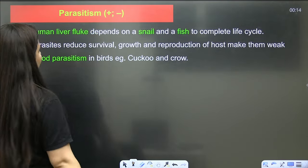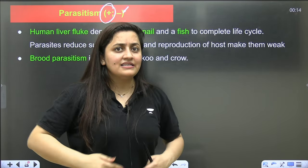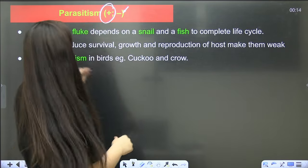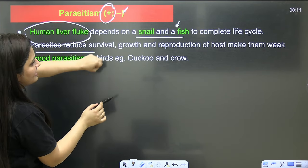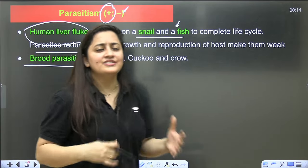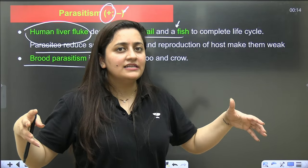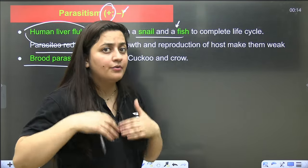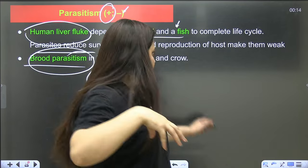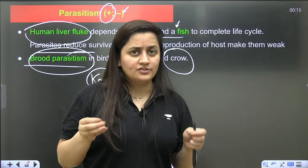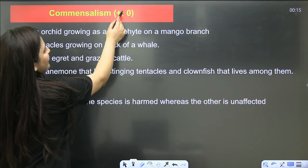In parasitism, the parasite is benefited (+) and the host is harmed (−). Examples: lice (ectoparasites), tapeworm and Entamoeba (endoparasites). The human liver fluke is a platyhelminth that depends on snail and fish to complete its life cycle. Parasites reduce survival, growth, and reproduction of the host. Endoparasites develop hooks and suckers to attach to cells; their reproductive systems are well developed. Brood parasitism example: the cuckoo (koel) lays eggs in the crow's nest that resemble crow's eggs.